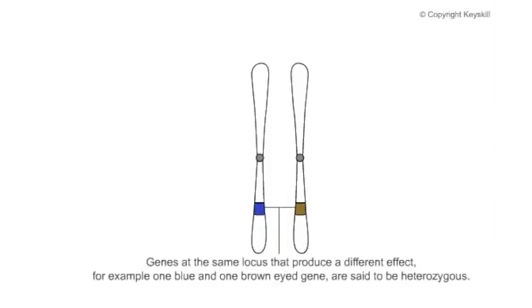Genes at the same locus that produce a different effect on the same characteristic, for example one blue and one brown-eyed gene, are said to be heterozygous.